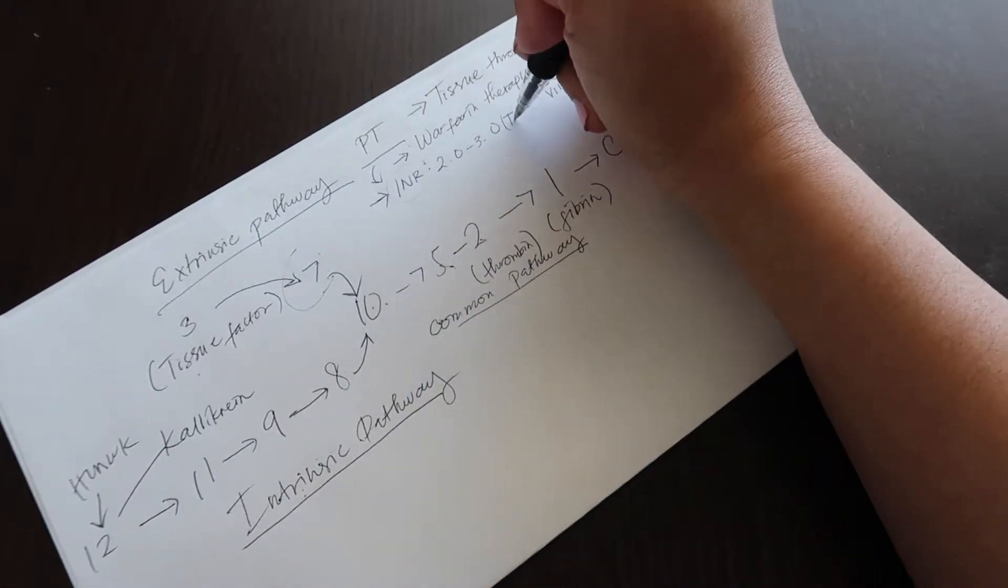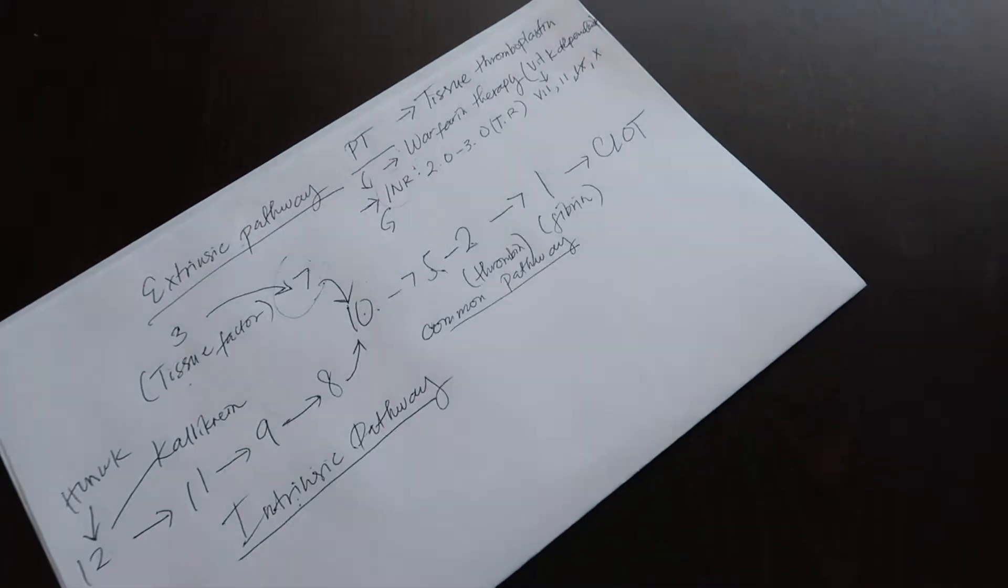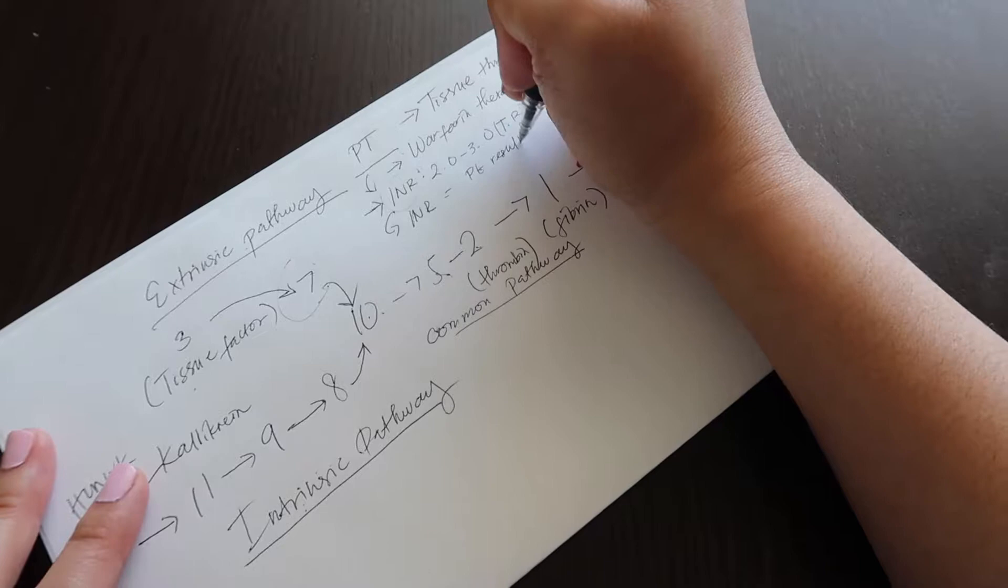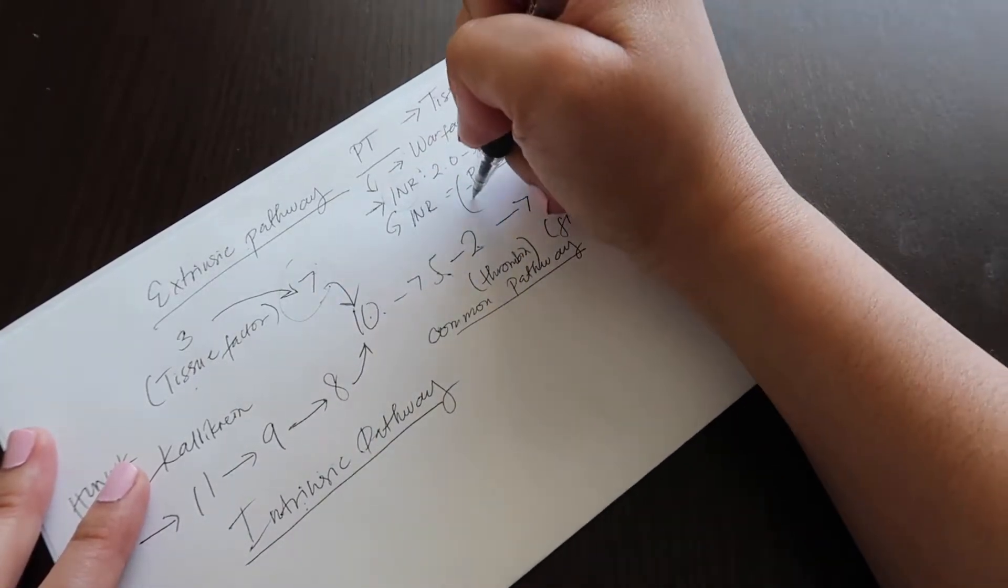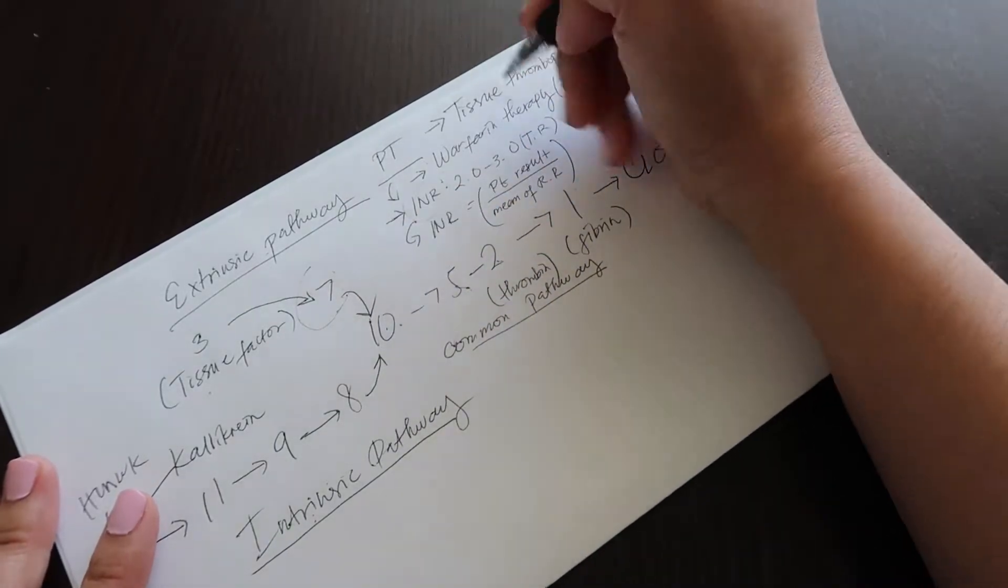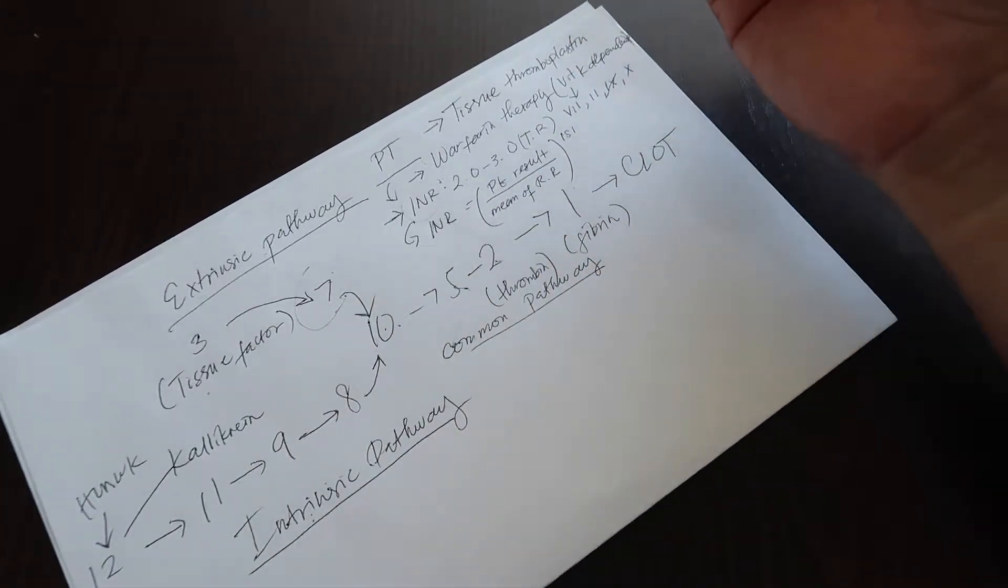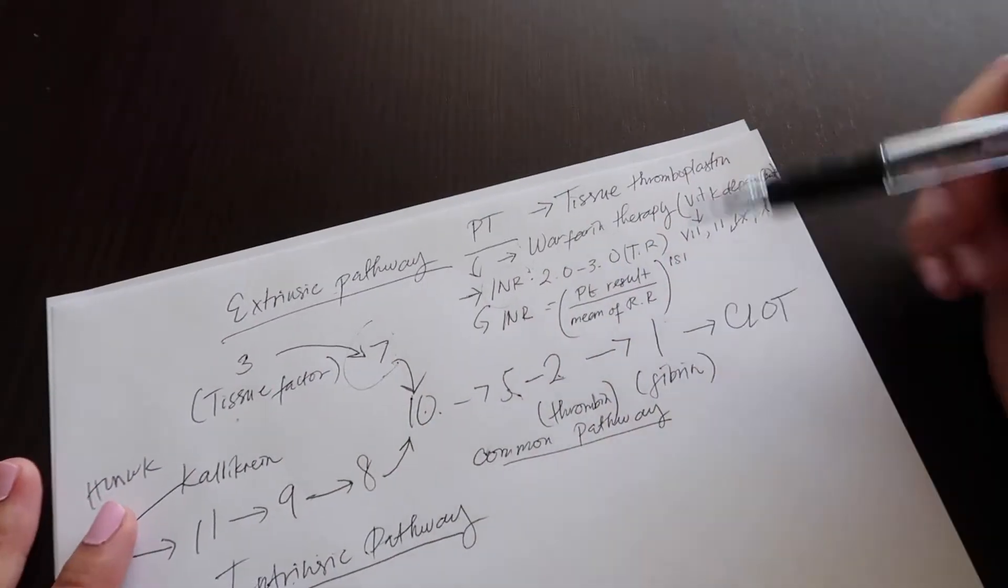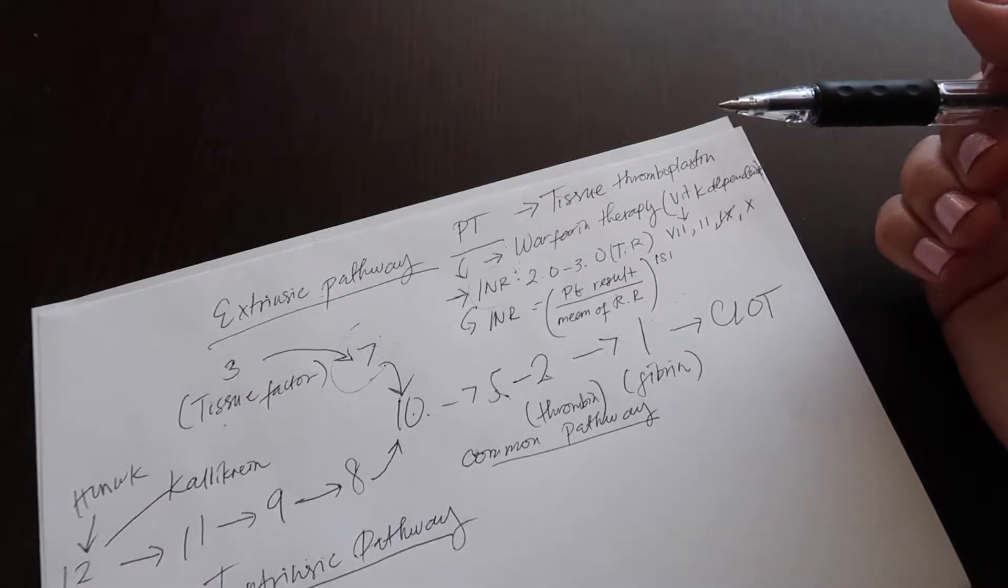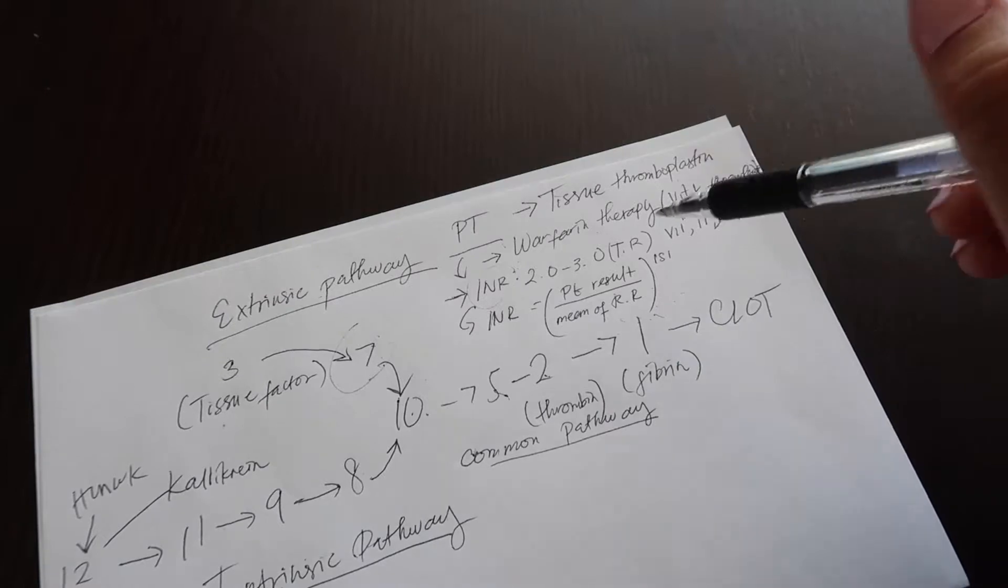What is the calculation for the INR? This is another important thing. So INR equals patient result over mean of reference range to the power of ISI, which is the international sensitivity index. Memorize that because that's a pretty common question. I could also say geometric mean sometimes, patient result over geometric mean to the power of the international sensitivity index.